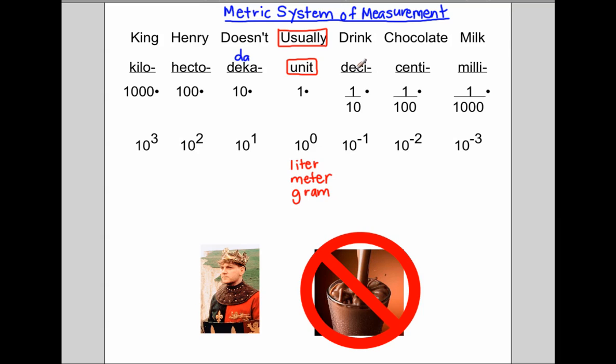That's one times the unit. And then we have deci. And deci, just like decimal, is like one-tenth of the unit. So it's whatever the unit is divided by ten.